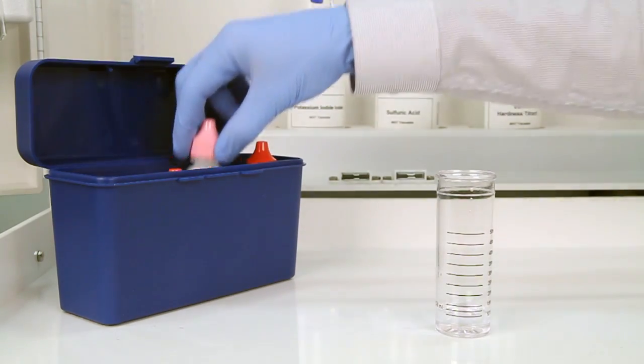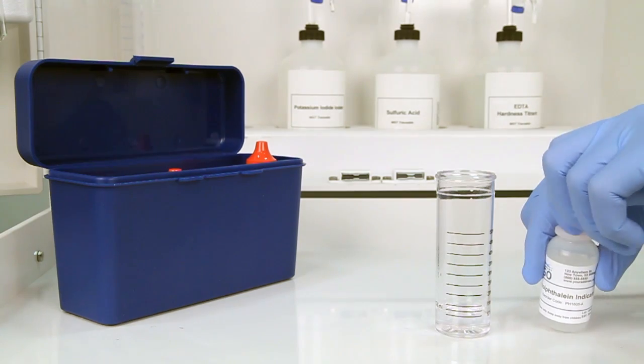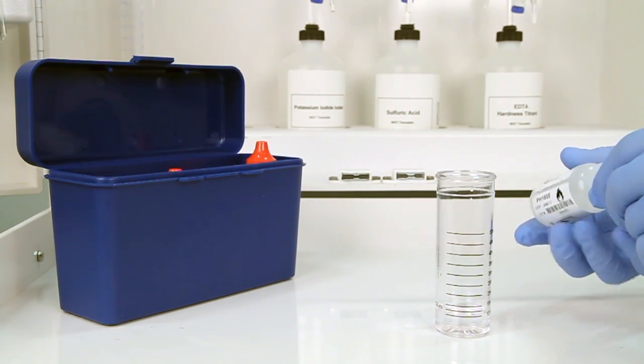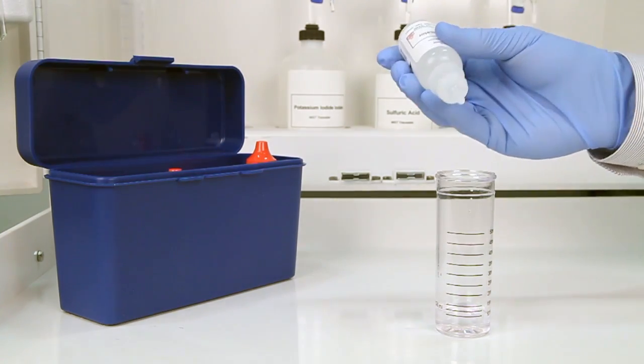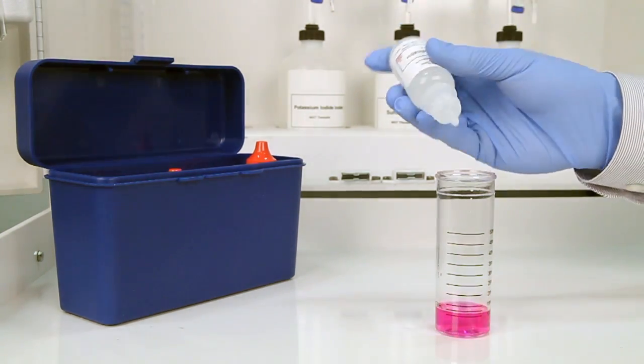Once you have collected an accurate sample, the next step is to add three drops of phenolphthalein indicator. The bottle contains a dropper tip, so it's important to hold the bottle vertically to get a consistent drop size.